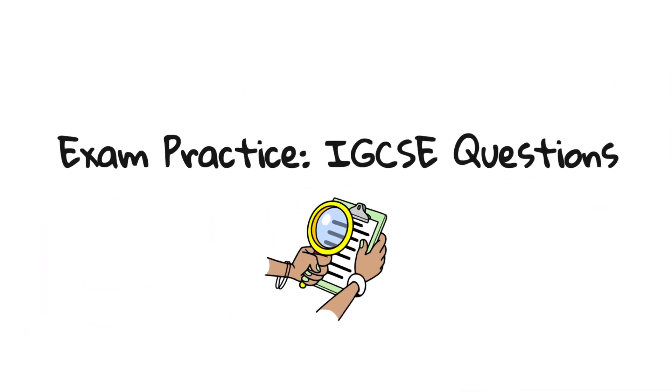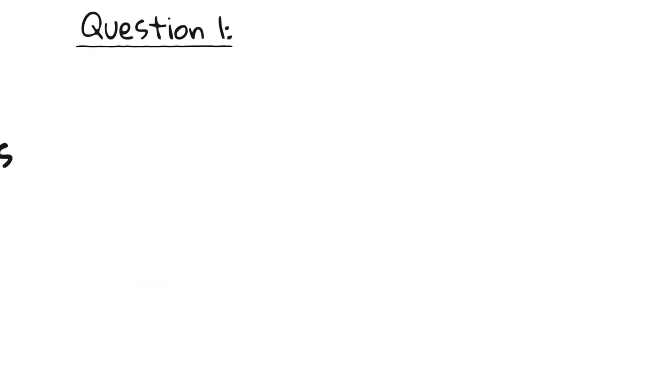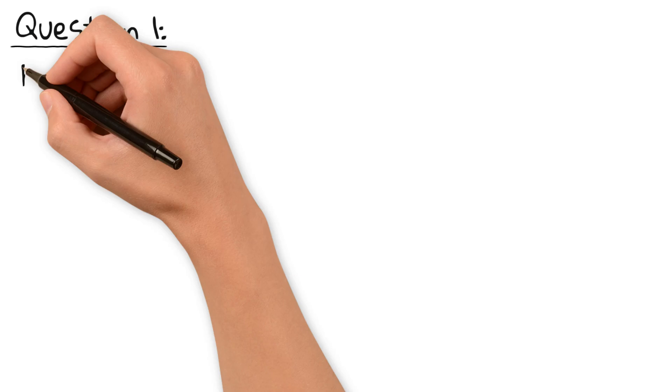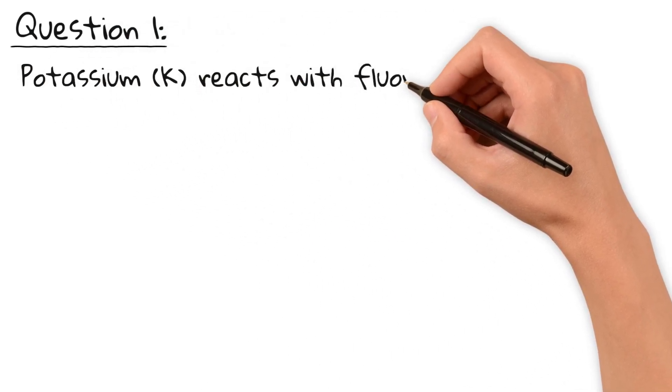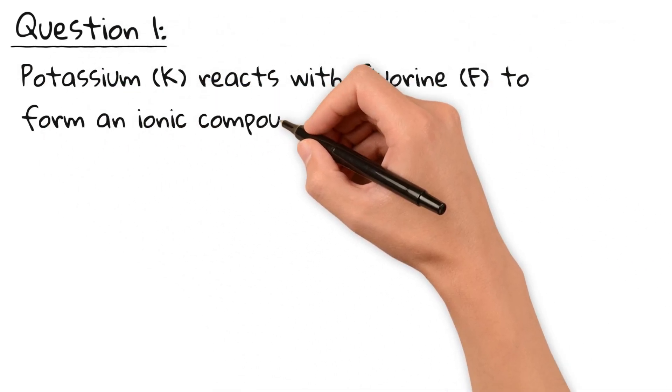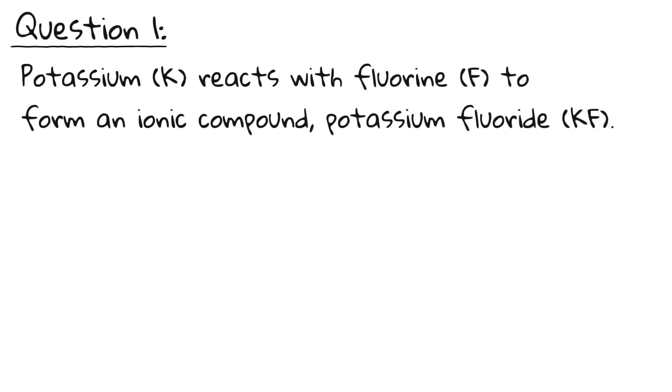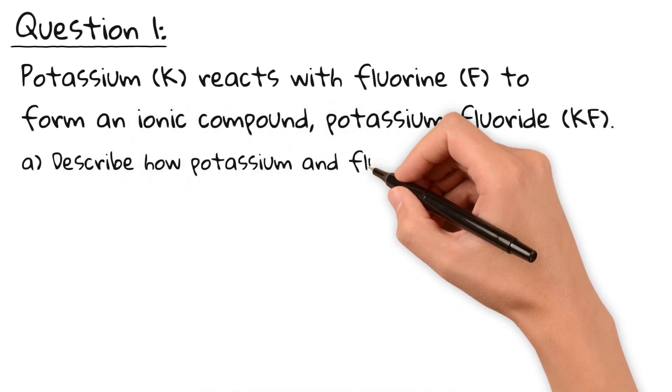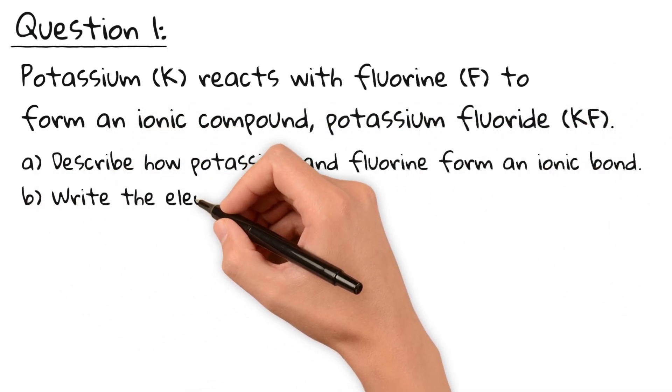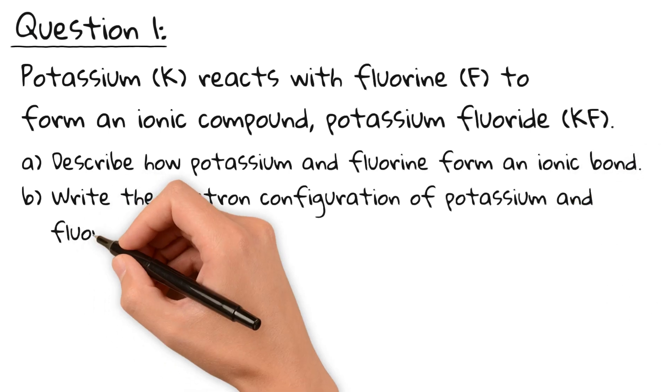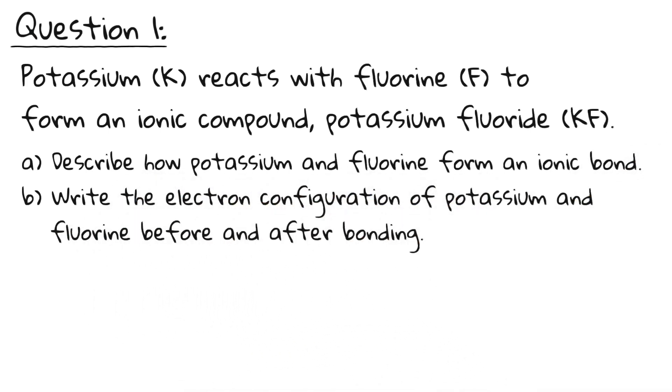Now, let's test your understanding with some IGCSE-style questions. Grab a pen and paper and try them out. Question 1. Potassium reacts with fluorine to form an ionic compound, potassium fluoride. A. Describe how potassium and fluorine form an ionic bond. B. Write the electron configuration of potassium and fluorine before and after bonding. Pause the video and give it a try.